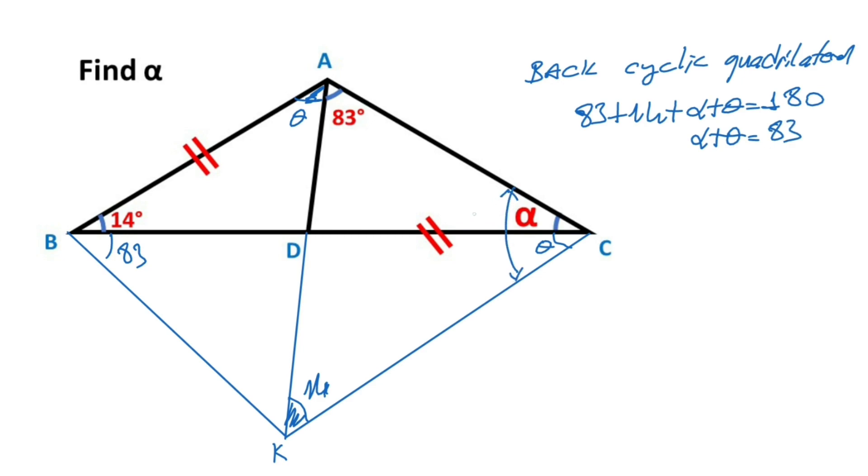So here this angle must be equal 83 degrees. That means we get an isosceles triangle. So AK must be equal KC. These two sides are equal.